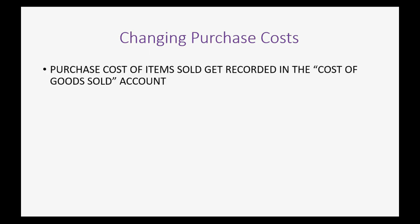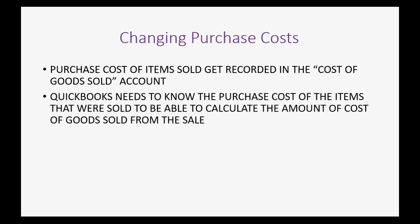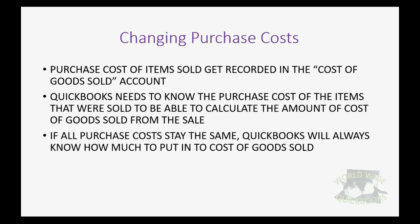Changing purchase costs can be a challenge when you're trying to track your cost of goods sold — to subtract it from your sales income to determine your profit. Purchase costs of items sold get recorded in the cost of goods sold account. QuickBooks needs to know the purchase cost of the items that were sold in order to calculate cost of goods sold for that particular sale. If all purchase costs always stay the same, QuickBooks will always know how much to put into the cost of goods sold account when you sell your merchandise.